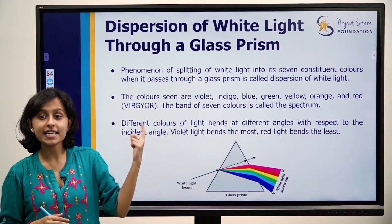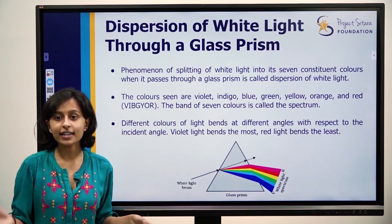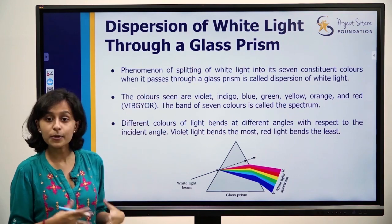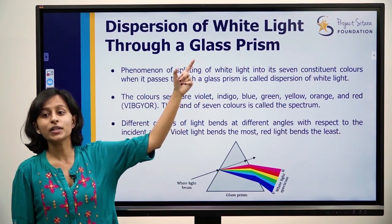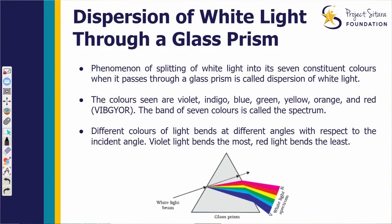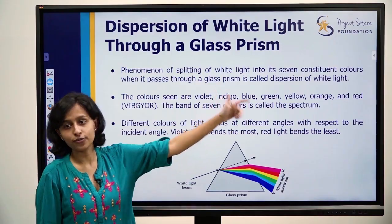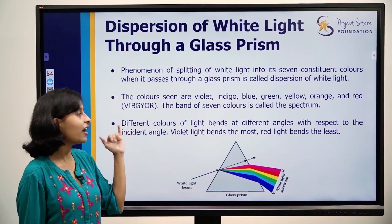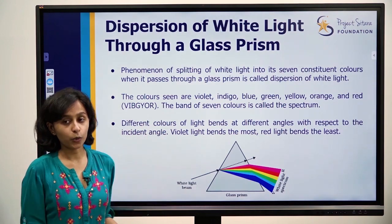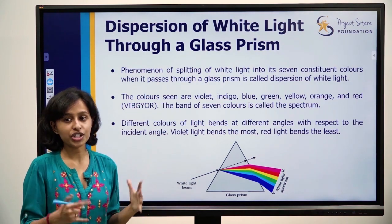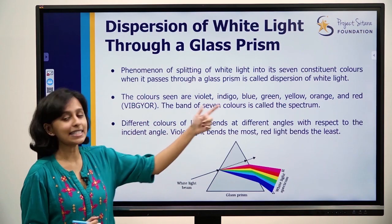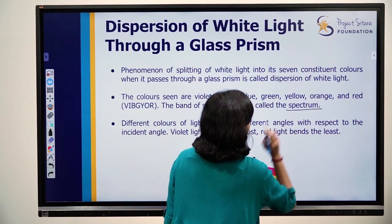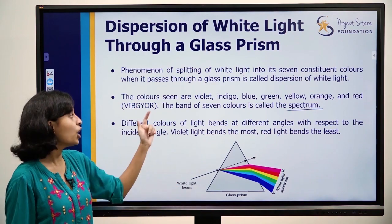Now a new concept — dispersion of white light through a glass prism. We learnt about reflection and refraction; now a new topic: dispersion. Dispersion is the phenomenon of splitting white light into its seven constituent colors when it passes through a prism. The seven colors are violet, indigo, blue, green, yellow, orange, and red — the constituent colors of the rainbow, remembered as VIBGYOR. The band of these seven colors is called the spectrum.